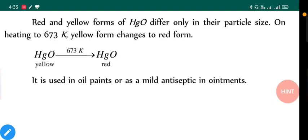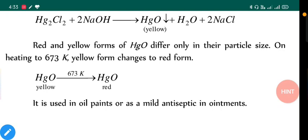It is used in oil paints or as a mild antiseptic in ointments. Usually mercury metal is poisonous, but in these type of formations it can be used as treatments or drugs.